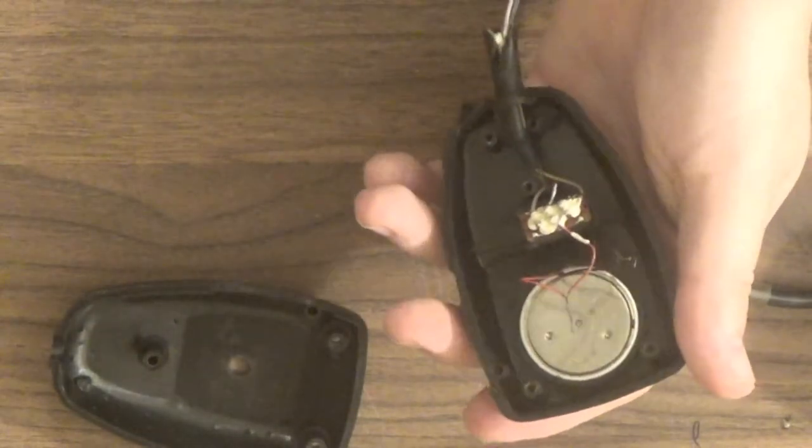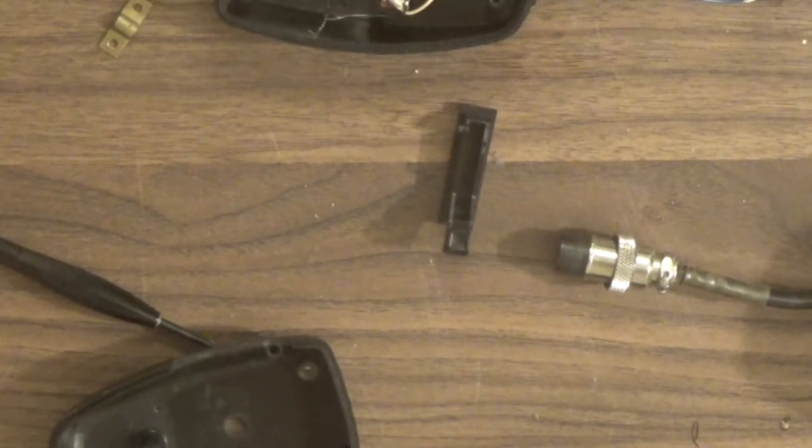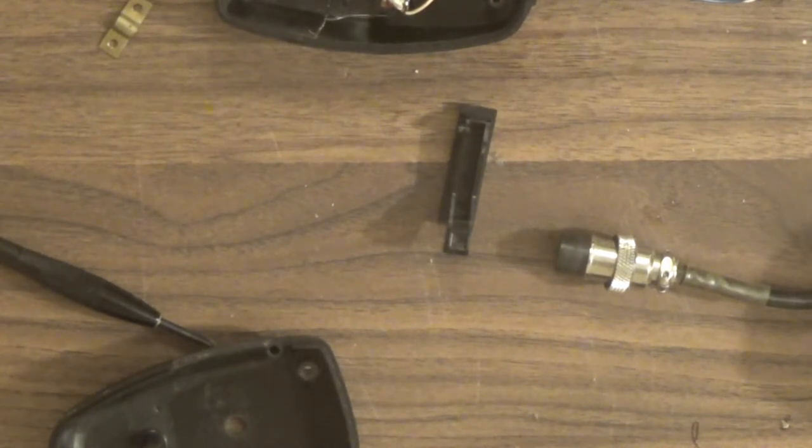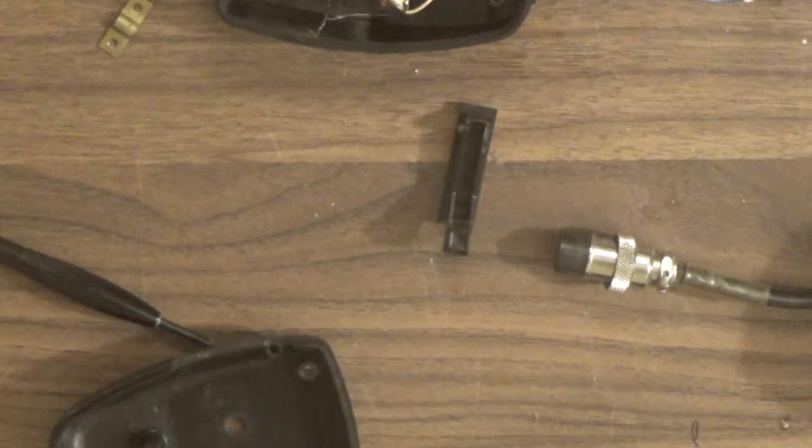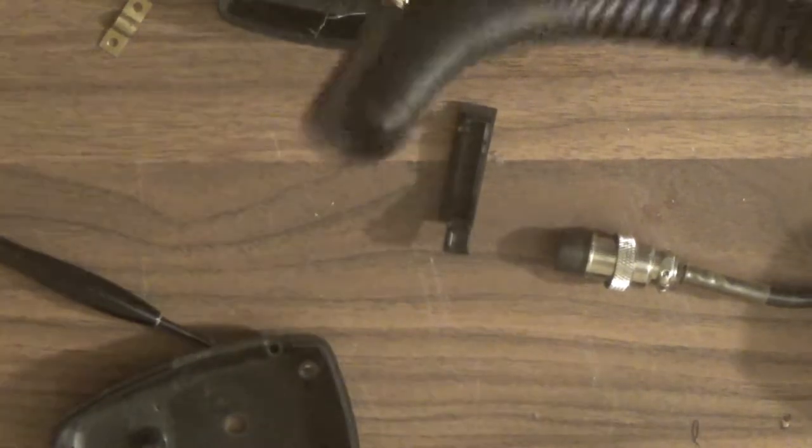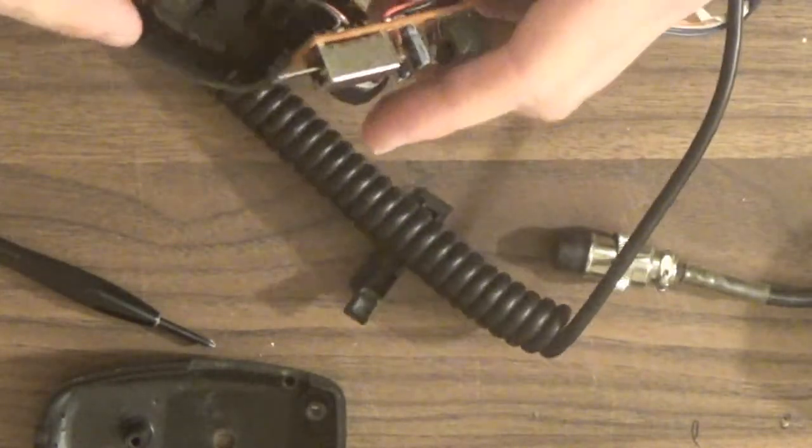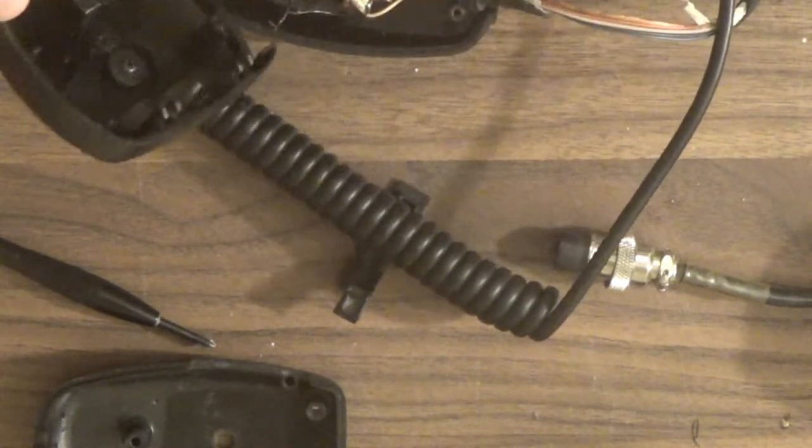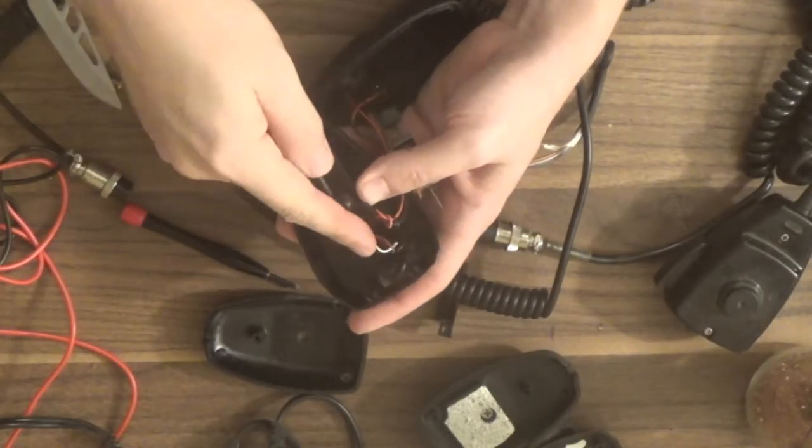There's this little hold down bracket that sort of braces the cord where it comes into the microphone so that stress on the cord out here does not translate to stress on these electrical connections inside here. Let's find a spare cord. Let's find a microphone that I know is crap but it has a decent cord on it. I've got my old power microphone laying right here with a good cord on it that I could unsolder. I've already unsoldered that cord. There we go, there's our cord.